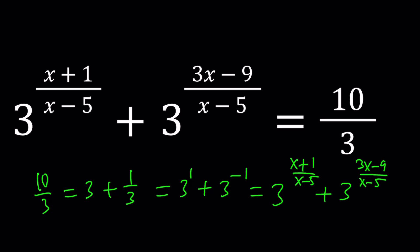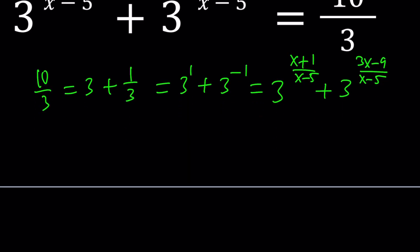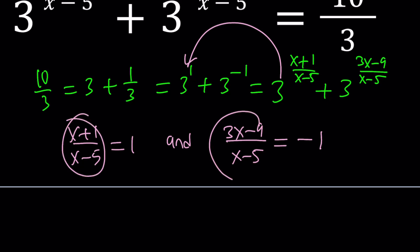So in other words, this is what I'm trying to say. Looking at this, I'm kind of thinking maybe (x+1)/(x-5) equals 1 and kind of comparing them this way. And (3x-9)/(x-5) is equal to negative 1. And then from here, we are supposed to get the same x value, right? So can we use this? Or if you switch these around, you can go ahead and switch them around and then look at the other case.